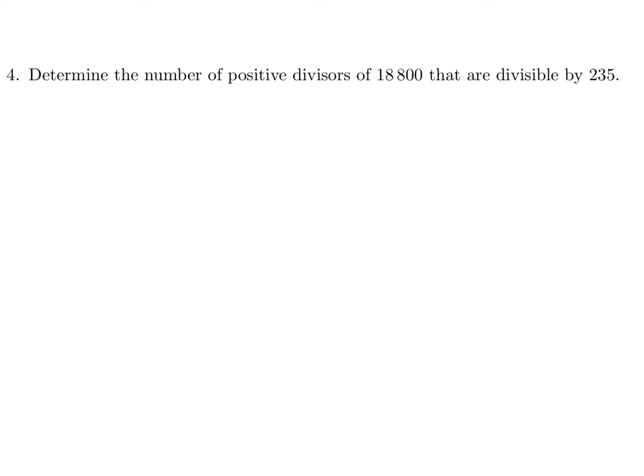Determine the number of positive divisors of 18800 that are divisible by 235. So the divisor, let's say, is x. If you divide it by, it's divisible by 235. That's the first condition. And it's obviously a divisor of 18800. So 18800 is divisible by x. So that basically means that x is of the form 235 times n, because this has to be some integer, right? Let's just call it n. So x is of the form 235 times n.